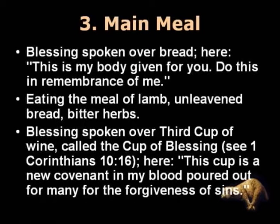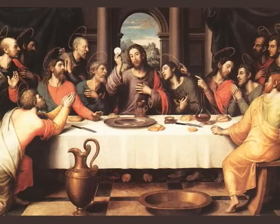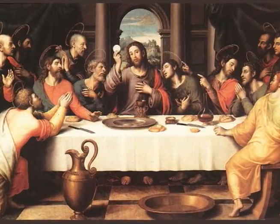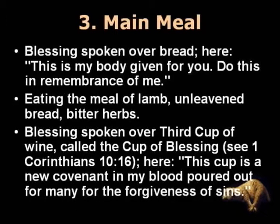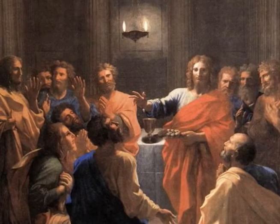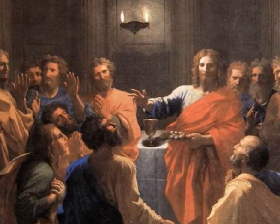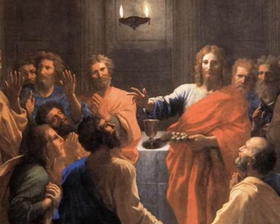This is followed by the third part, the main meal. A blessing is spoken over the bread by the head of the family, who broke it and distributed it to those at the table. Here is where Jesus would have blessed the bread, broken it, and distributed it to his disciples — forever making the bread special with these unique words: This is my body, given for you. Do this in remembrance of me. Then there was the eating of the meal of lamb, unleavened bread, and bitter herbs. And then a blessing spoken over the third cup of wine, called the cup of blessing in 1 Corinthians 10:16. Here, before the concluding hymn — the great Hallel — Jesus would have blessed the cup and said: This cup is a new covenant in my blood, poured out for many for the forgiveness of sins. Drink of it, all of you.